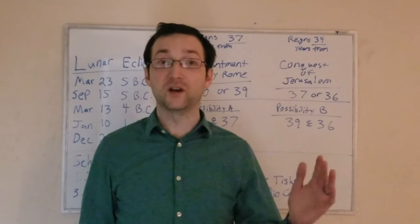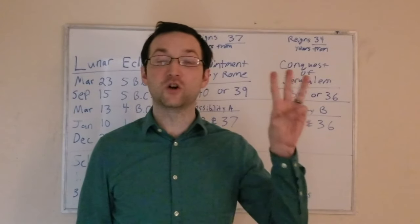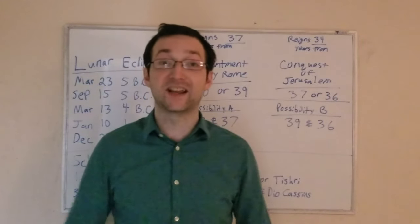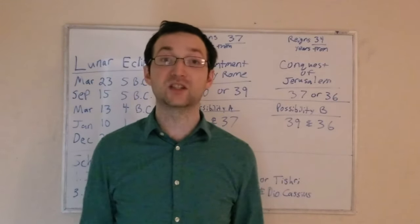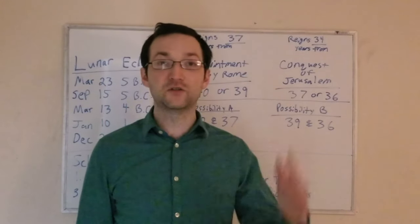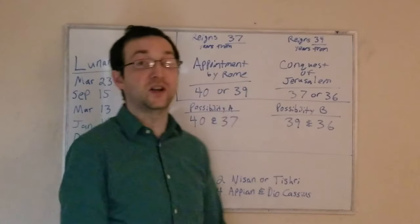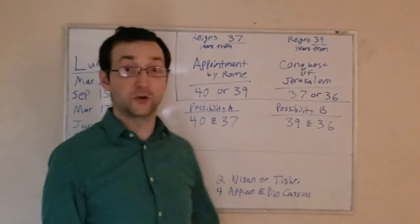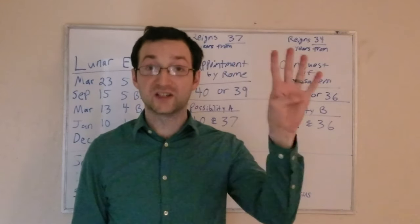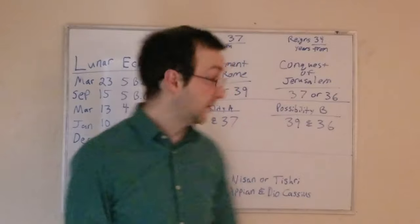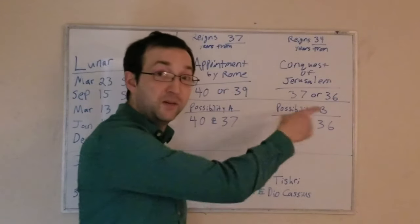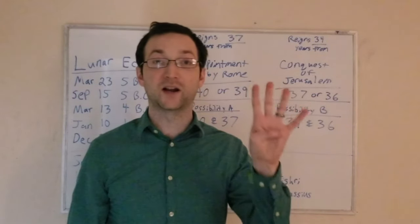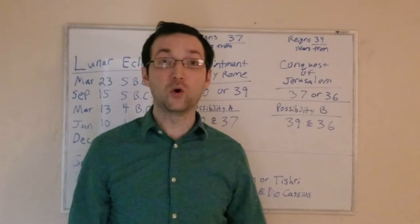When he mints these coins, they're minted as year three. Now, it's widely held that Herod has to mint these coins after he gets to Jerusalem because now he has a mint and he has a kingdom in which he can disseminate these coins. But if his reign is being reckoned inclusively, whether we start with 40 or 39, 40, 39, 38, 37 would be his fourth year. Well, if we start with 39, 39, 38, 37, 36, 36 would be his fourth year. So whether we go with possibility A or possibility B, Herod should be minting his first coins in Jerusalem in year four if his reign is being reckoned inclusively, but the coins say year three.